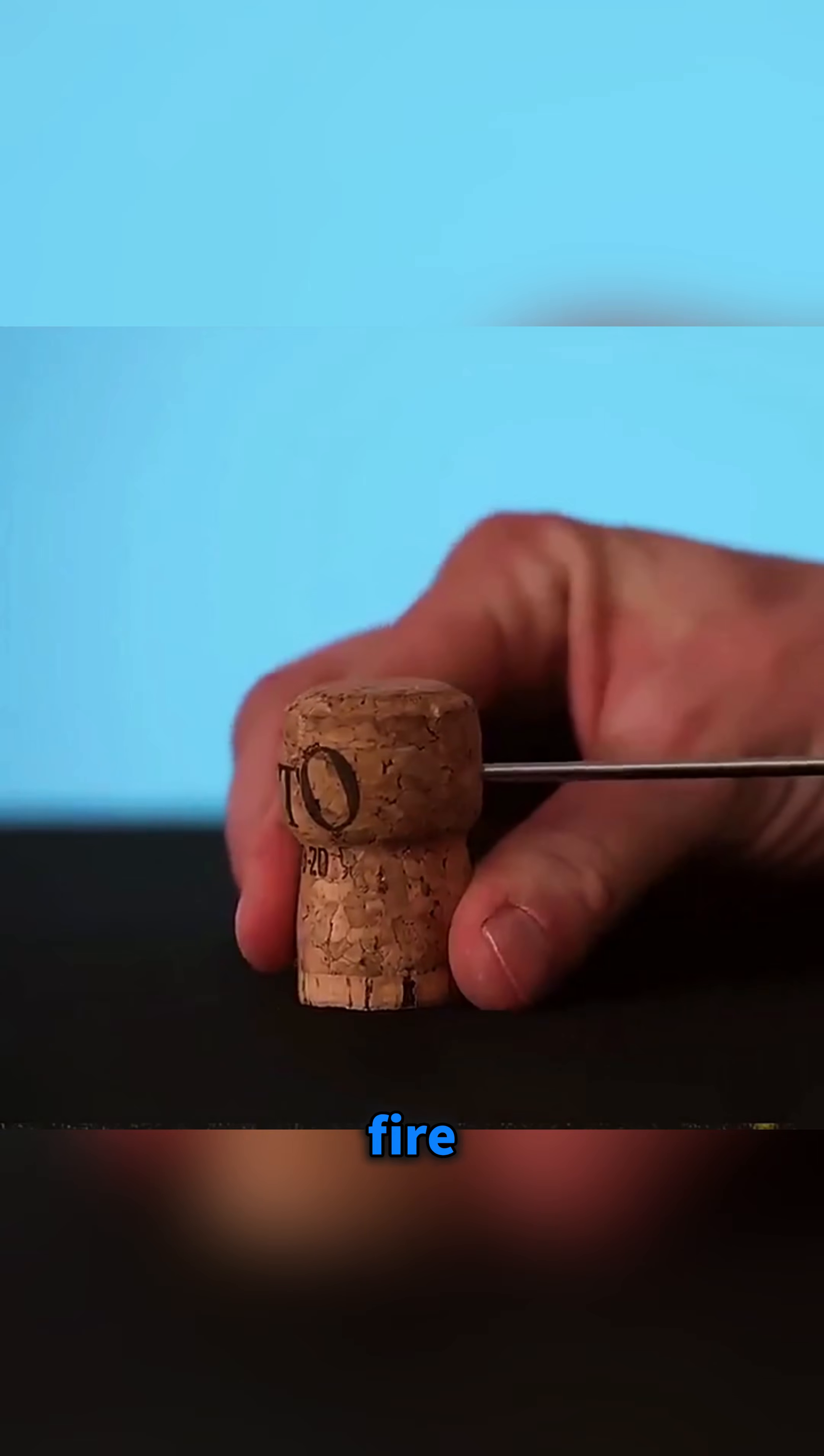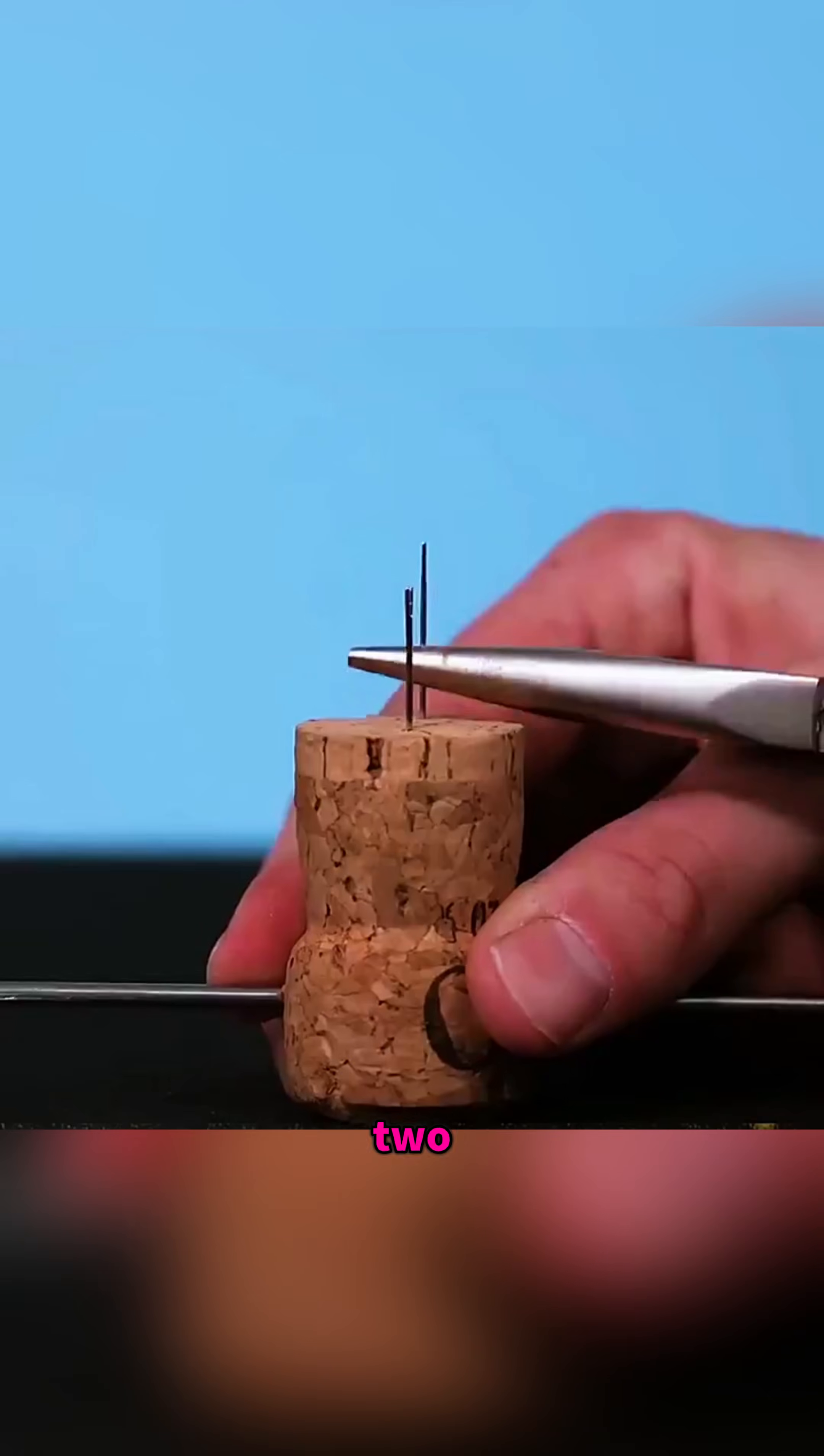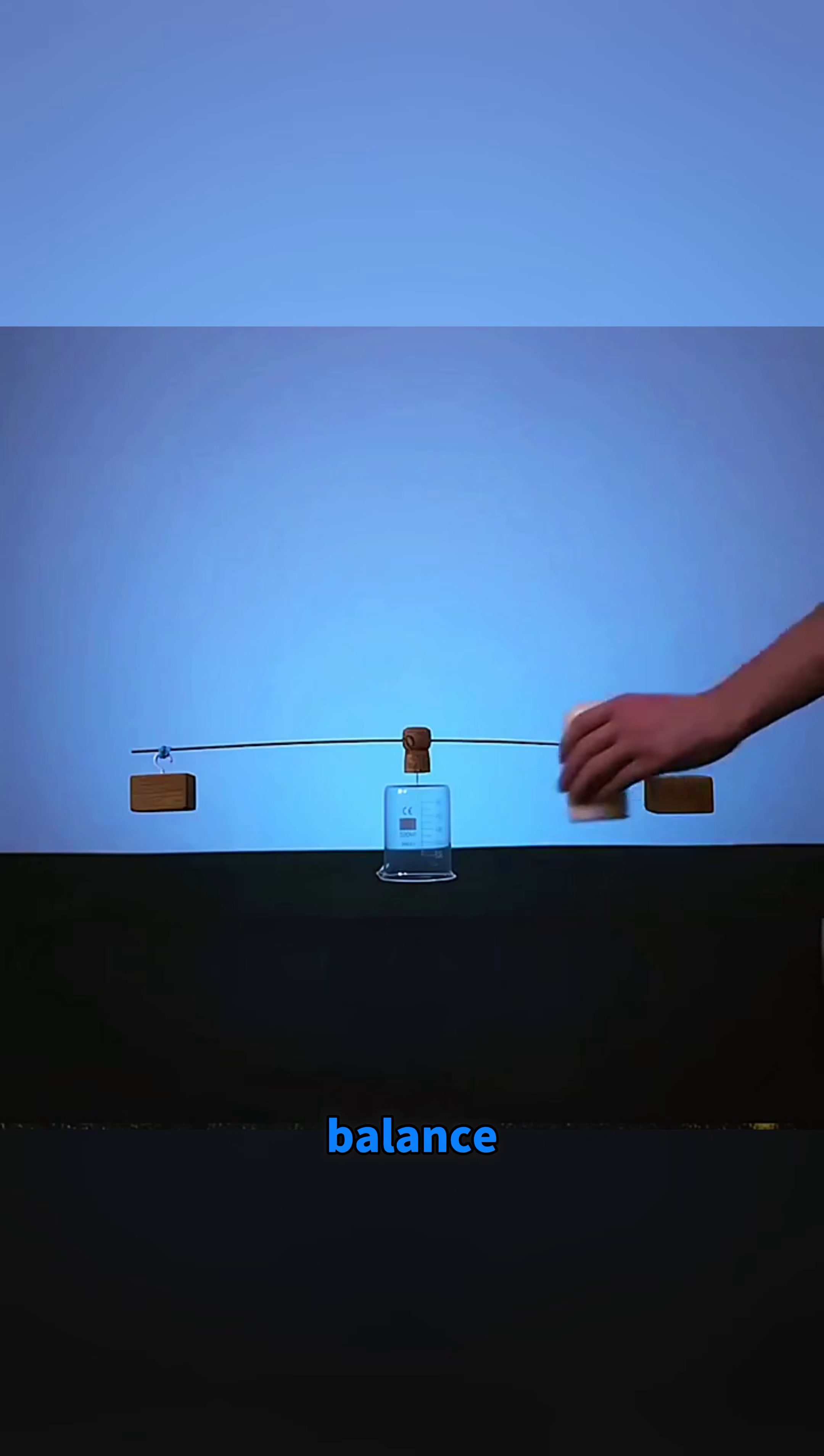Push a steel wire through a wine bottle cork and stick two sewing needles into the top like arms, then balance the setup carefully on a support. When you bring one side near a burning candle,